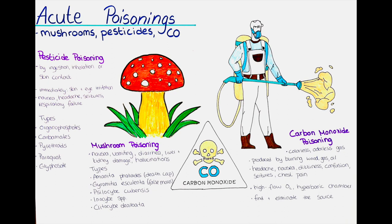The time it takes for symptoms of carbon monoxide poisoning to develop can vary depending on the level and duration of exposure. In some cases symptoms may develop within minutes of exposure to high concentrations, while in others it may take several hours or days. Early symptoms can be mild and may be mistaken for other illnesses such as the flu. These include headache, dizziness, weakness, nausea, vomiting and confusion. As the concentration of carbon monoxide in the body increases, symptoms may become more severe and include chest pain, difficulty breathing, seizures and loss of consciousness.